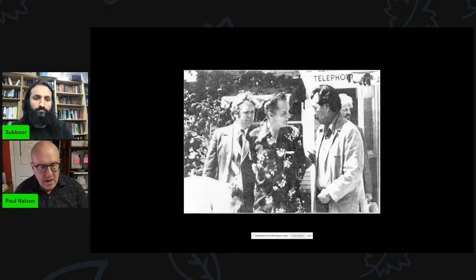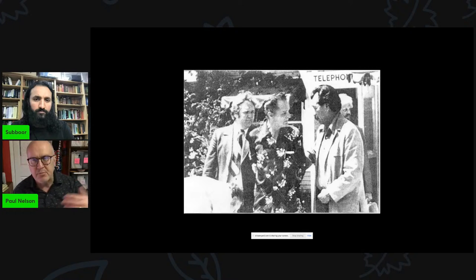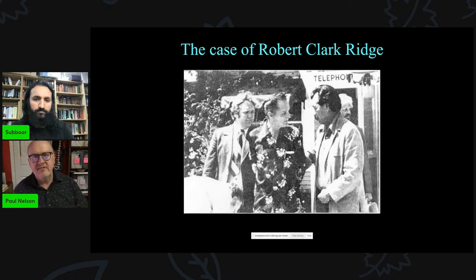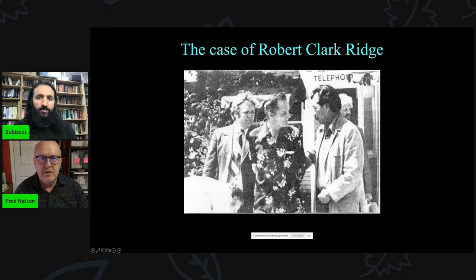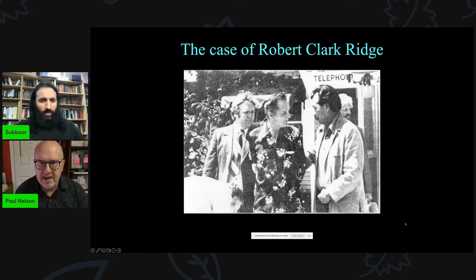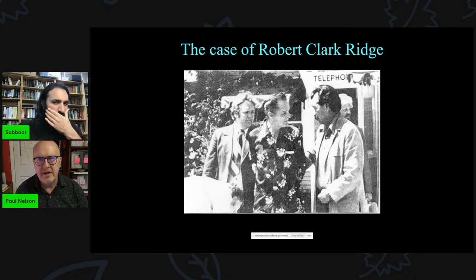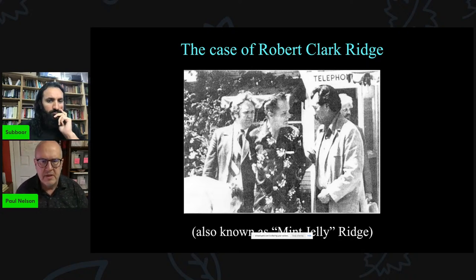Now I want to give you a real-life case to begin to explore what I'm calling the problem of induction with respect to inferring intelligent causes. This is a real-life case. This is Robert Clark Ridge — the man in the middle, with the Hawaiian shirt and the natty pompadour haircut — being arrested by California plainclothes police in Morro Bay, California in 1979. His legal name was Robert Clark Ridge, but he was known to investigators as Mint Jelly Ridge, for reasons you'll understand in a moment.